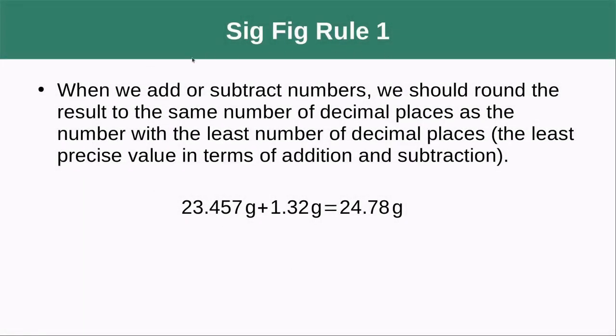So let's go through our rules here. When we add or subtract numbers, we should round the result to the same number of decimal places as the number with the least number of decimal places, the least precise value in terms of addition and subtraction.